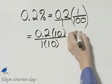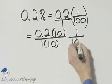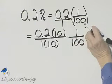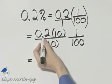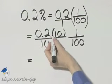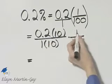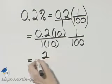Now we still multiply by one over one hundred from here. So let's see what we have. We have 0.2 times ten. Remember that has the effect of moving the decimal point one place to the right, times one. Well that's simply two.